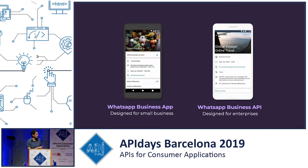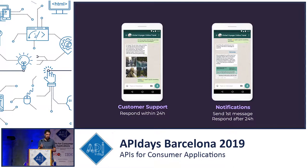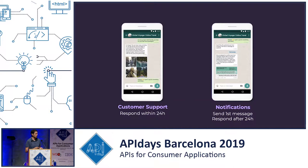There are two use cases with the WhatsApp Business API: customer support and notifications. When you reply to a message from a user within 24 hours, this is considered a customer support message. If you reply after 24 hours, or initiate the conversation as a company, that is considered a notification. From a technical point of view there's no difference — it's the same API endpoint — but the business implications are very different, starting with the fact that you have to pay for notifications, while customer support messages are completely free.